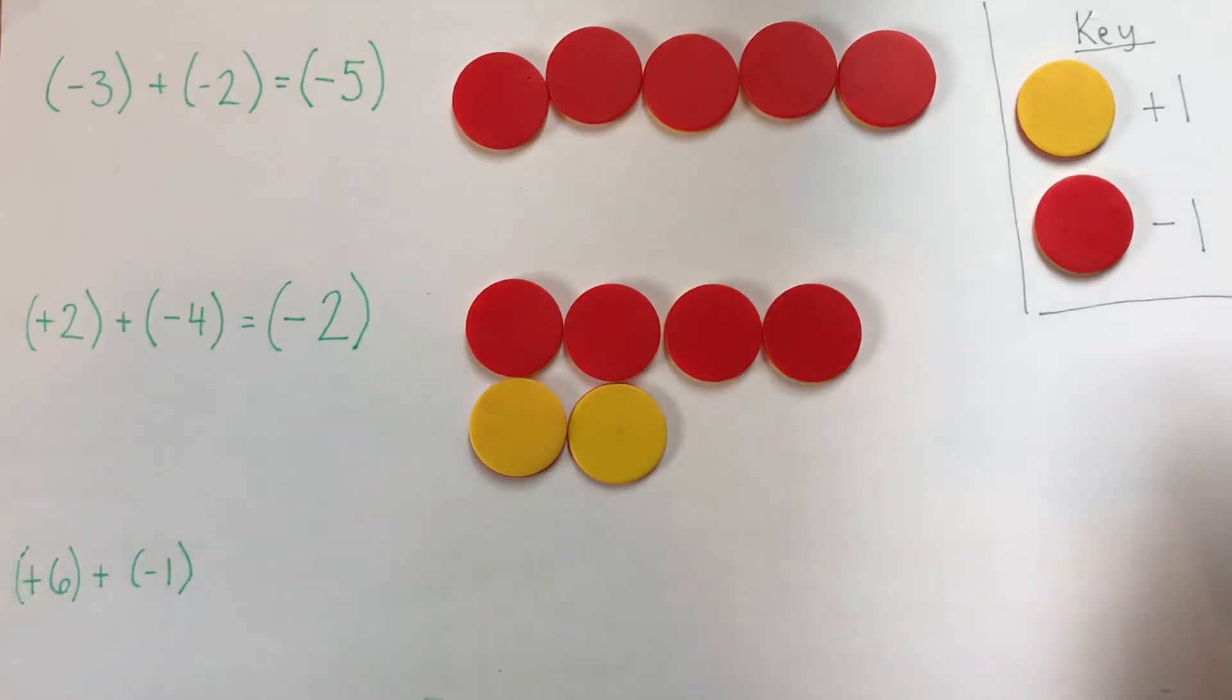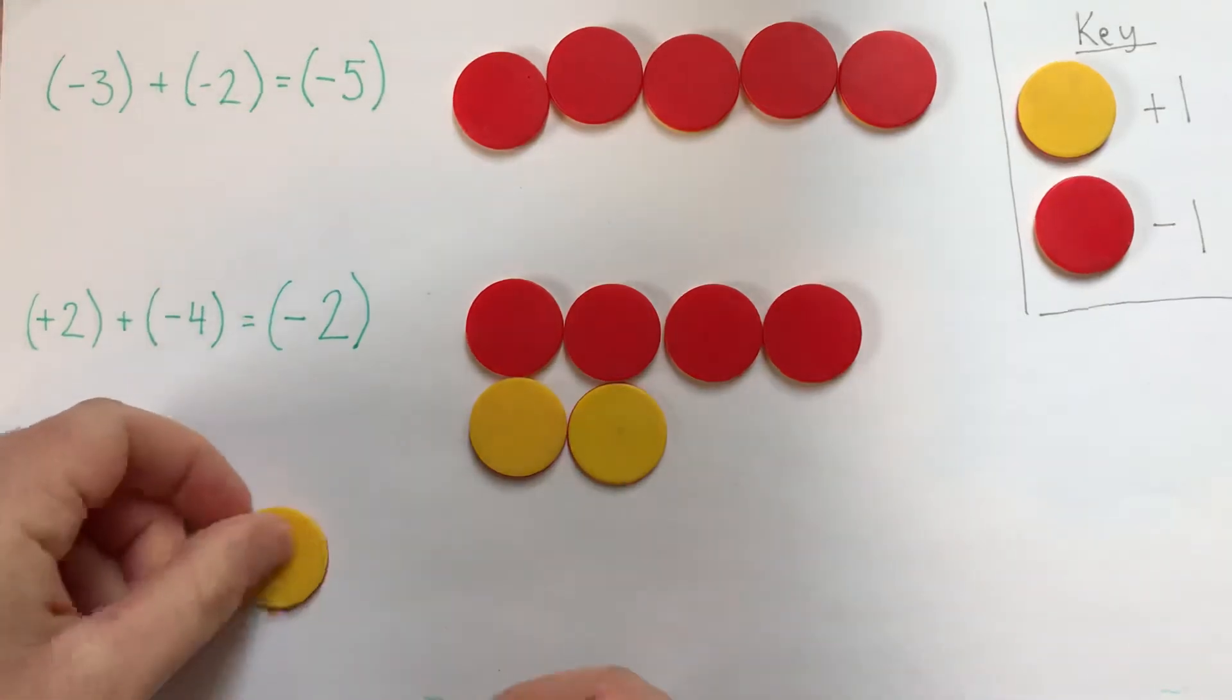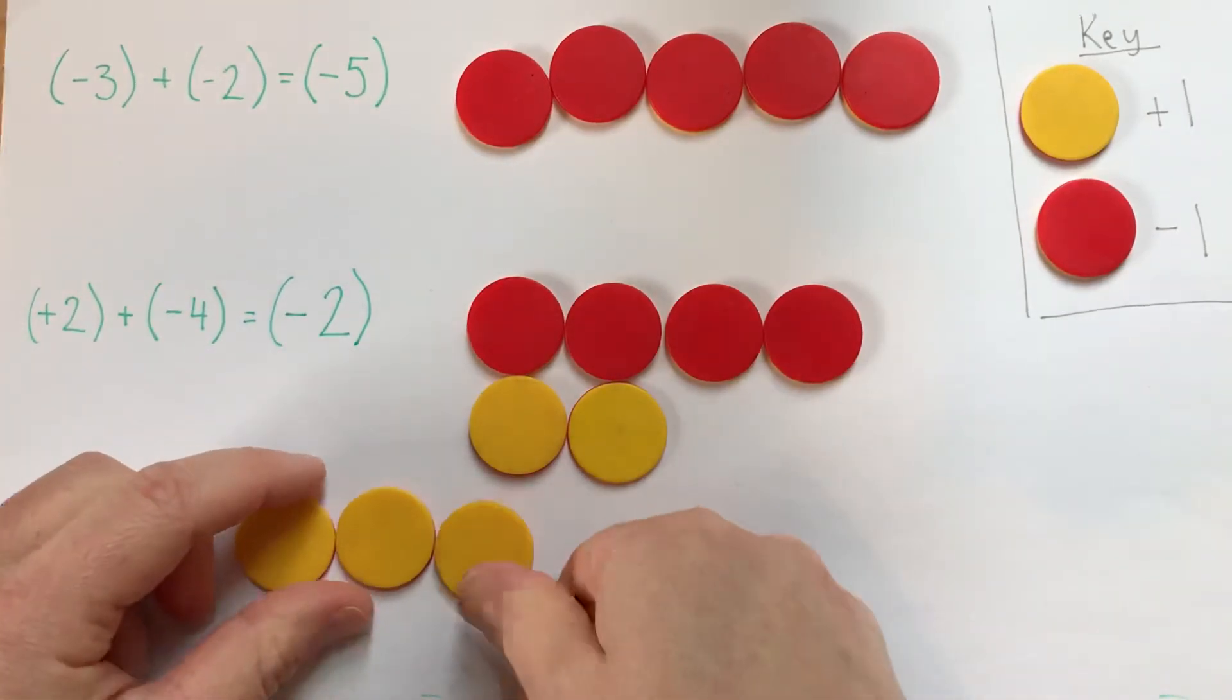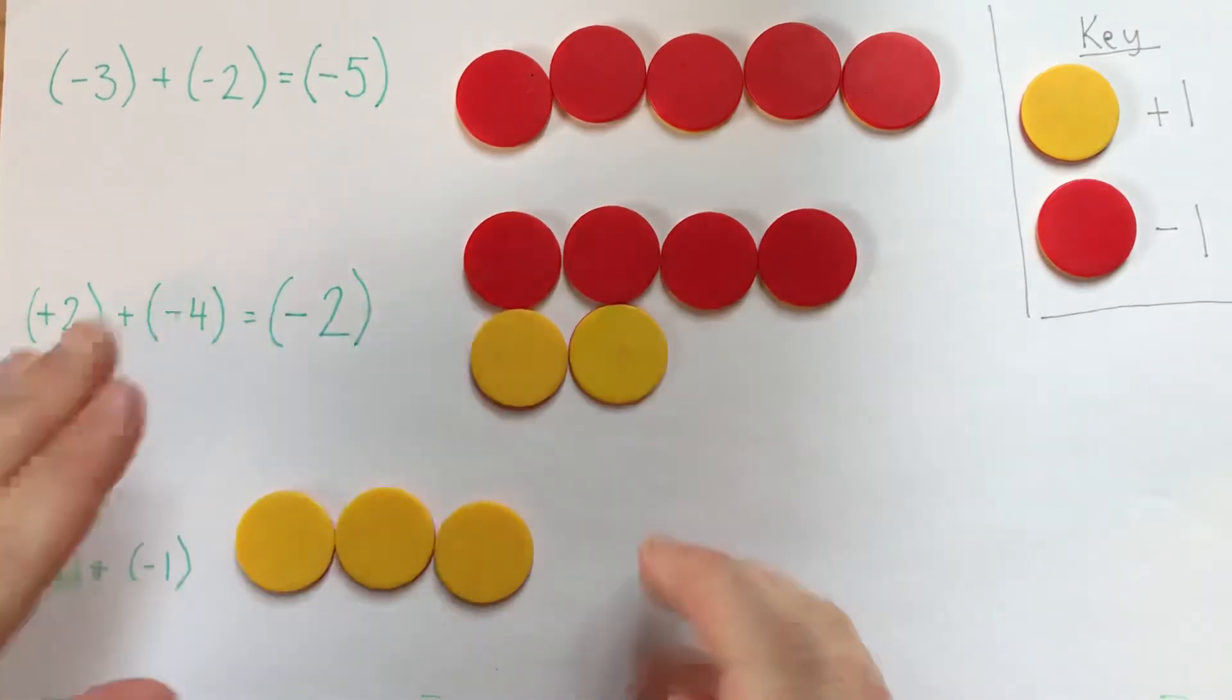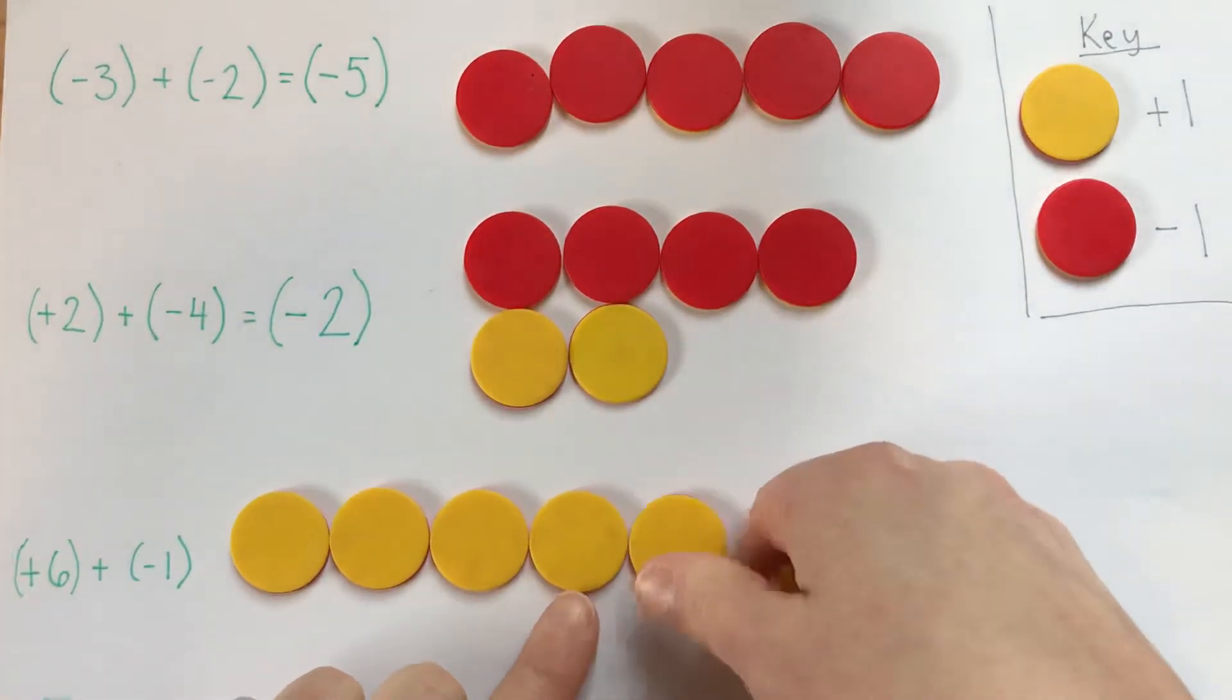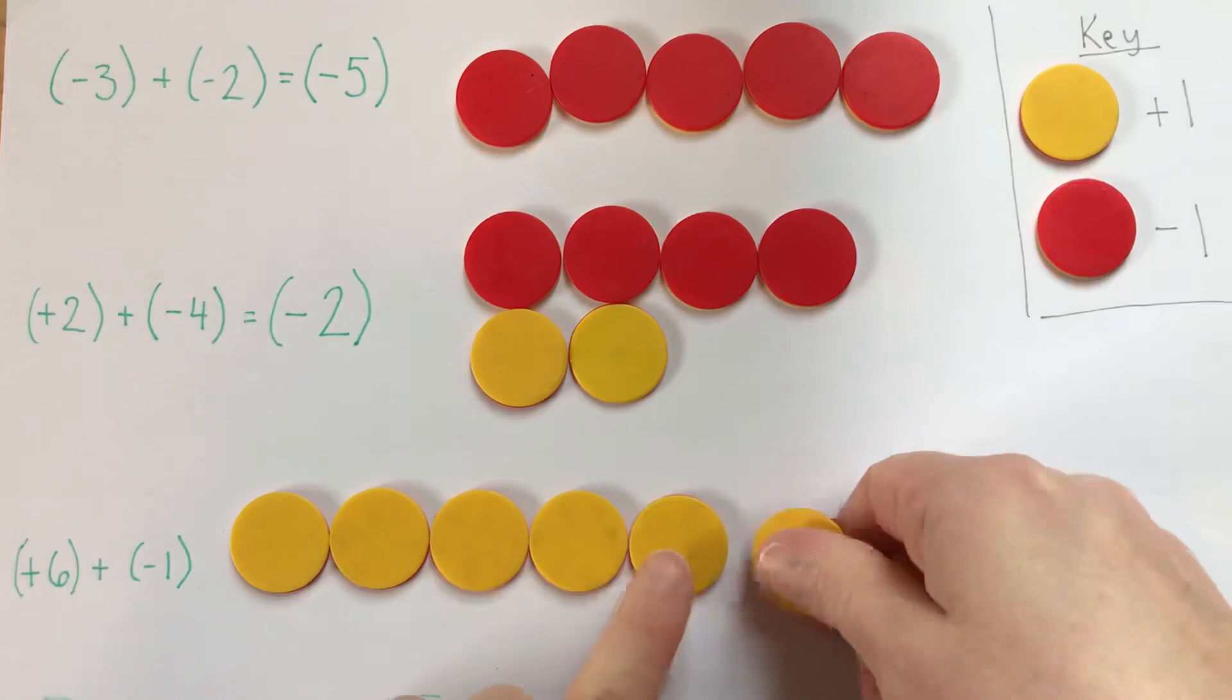For the last one, we'll do positive six. Slide this one up a little bit. One, two, three, four, five, six.